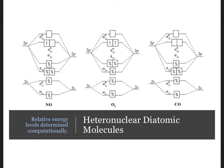A heteronuclear diatomic molecule means that we're making covalent bonds between two different elements. Here I've listed nitrogen monoxide, molecular oxygen, and carbon monoxide for examples.